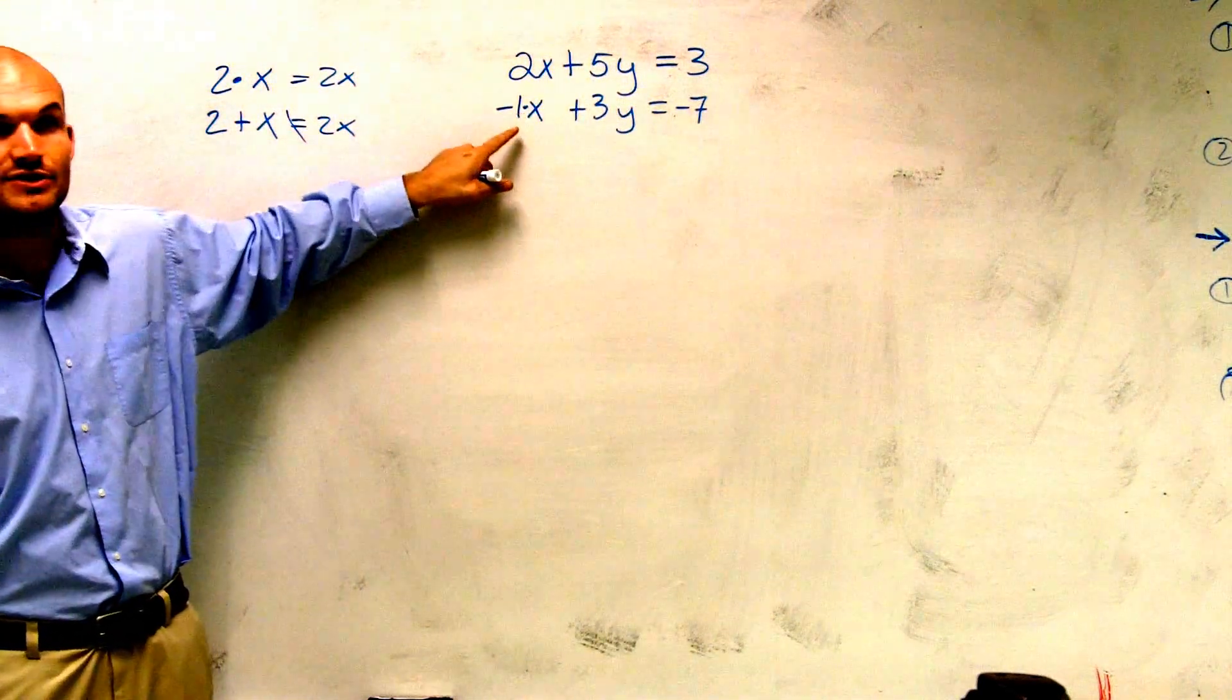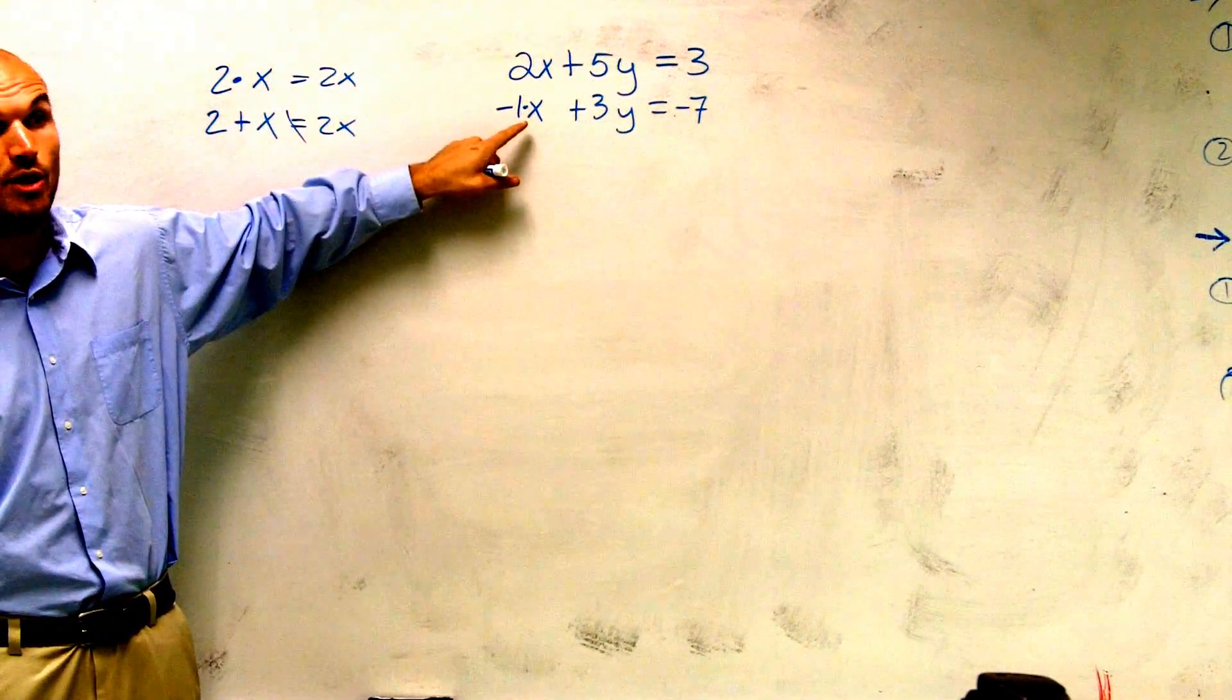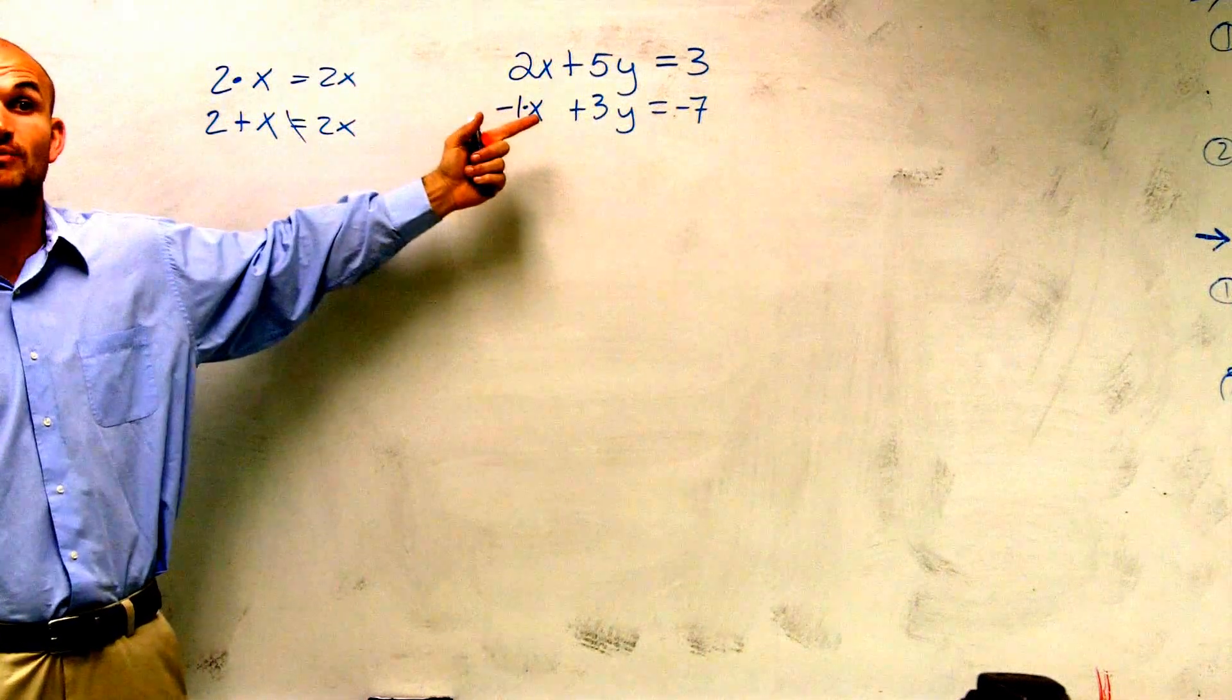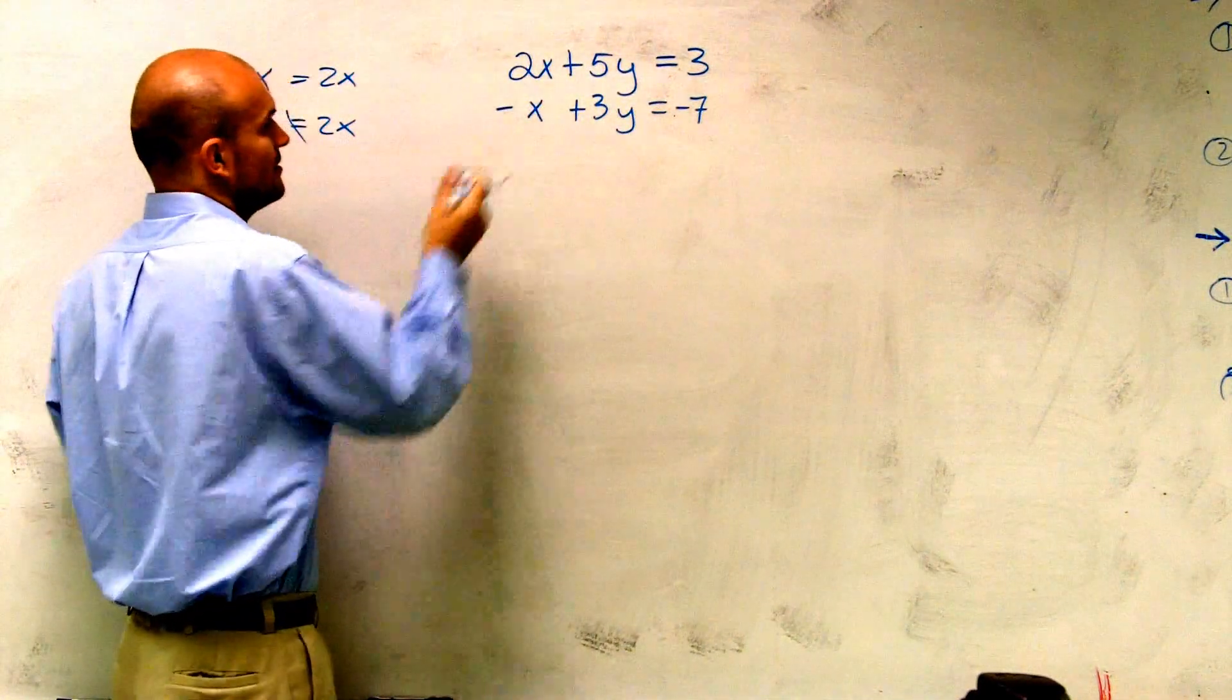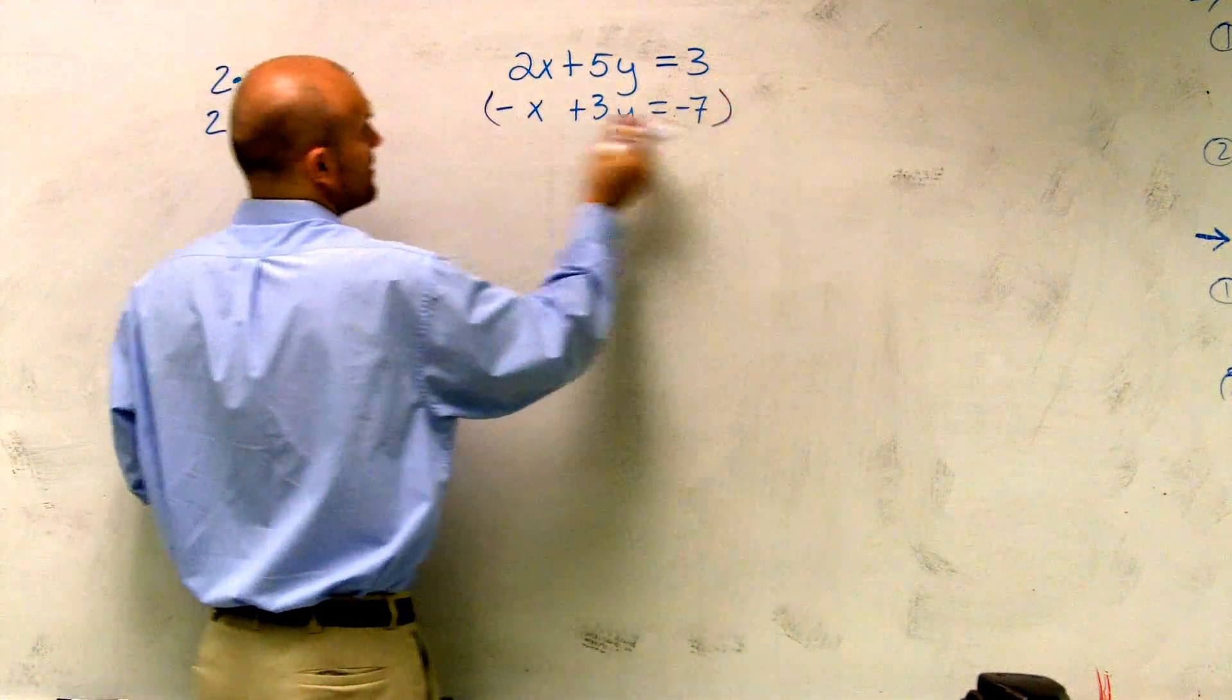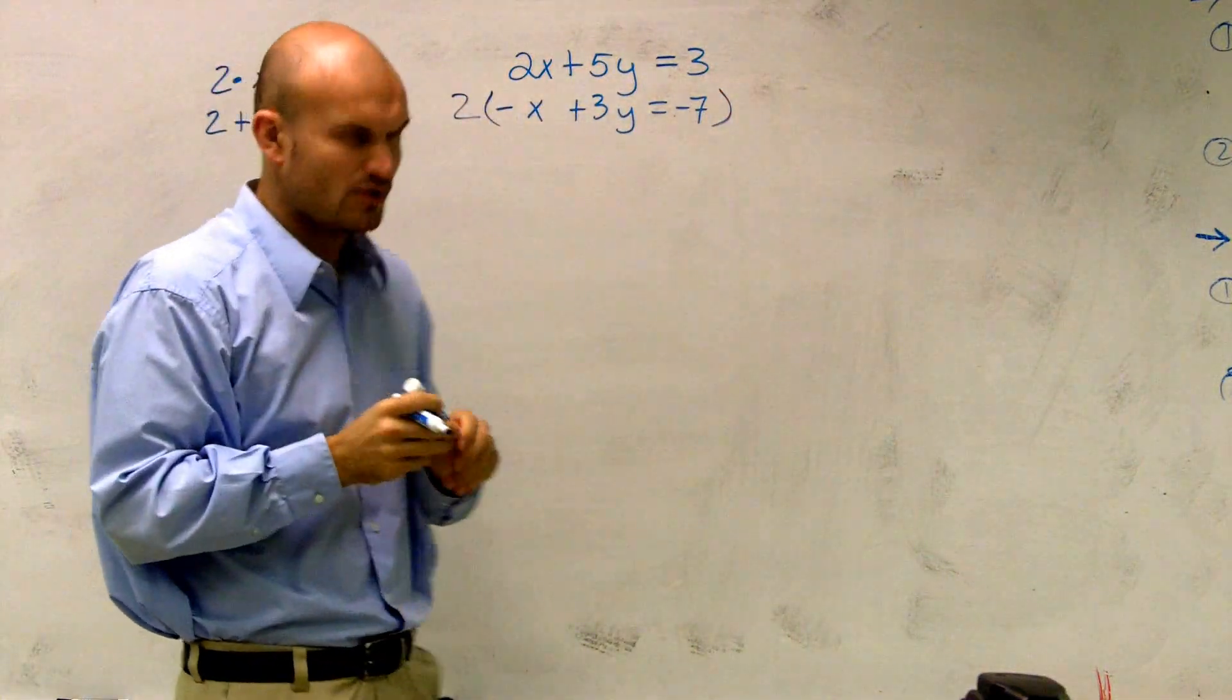So if I want to make this to be a 2, what do I have to do? I have to add or multiply by 2. You're going to want to multiply by 2. So what I'm going to do is I'm going to write this whole thing out, and I'm going to say, I'm going to multiply the whole equation by 2.